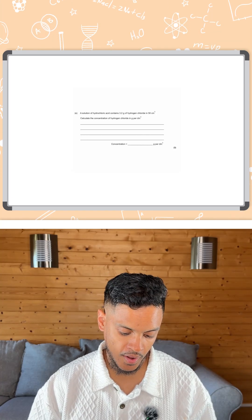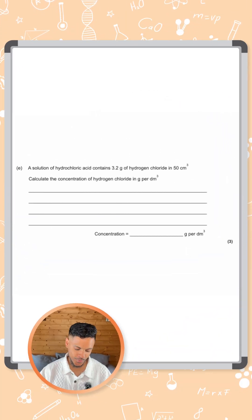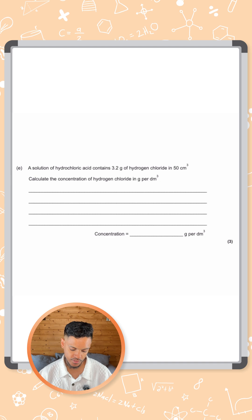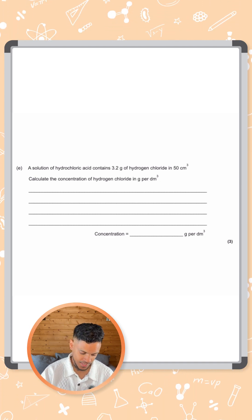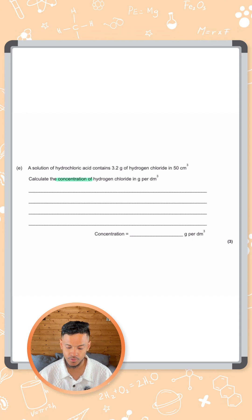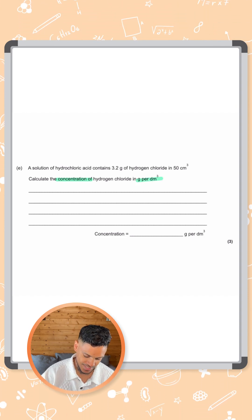This question says a solution of hydrochloric acid contains 3.2 grams of hydrogen chloride in 50 centimeters cubed. Calculate the concentration of hydrogen chloride in grams per dm cubed.